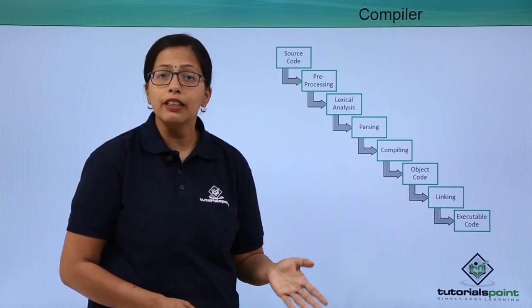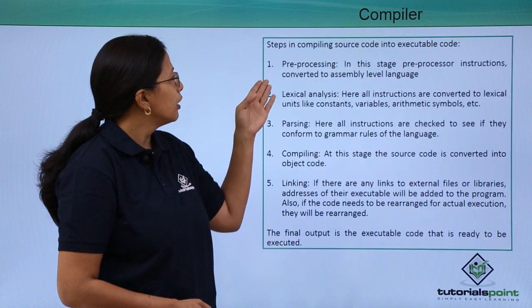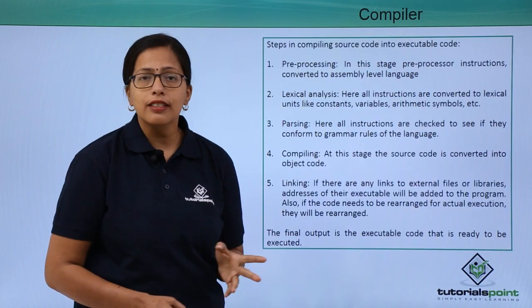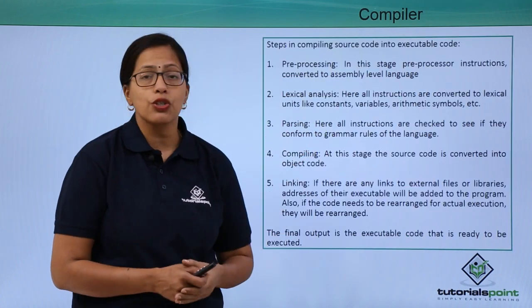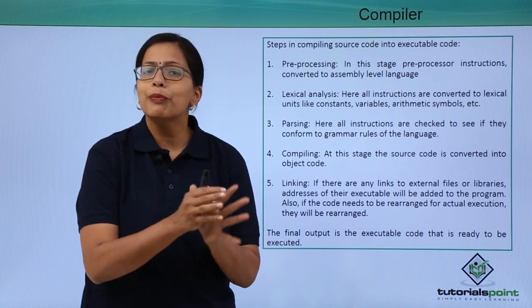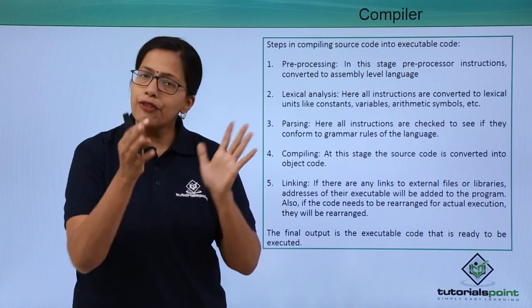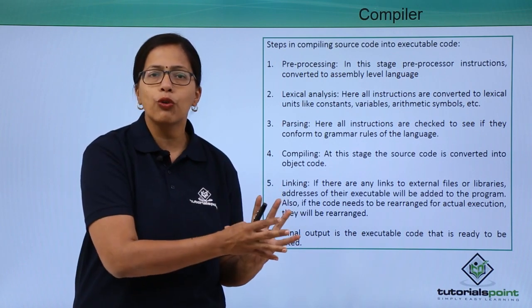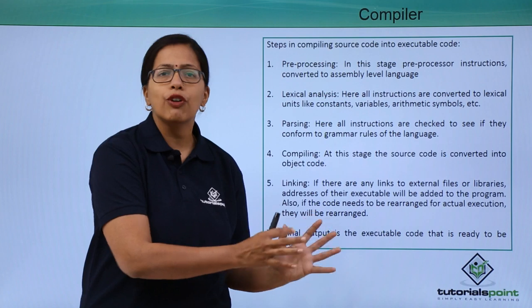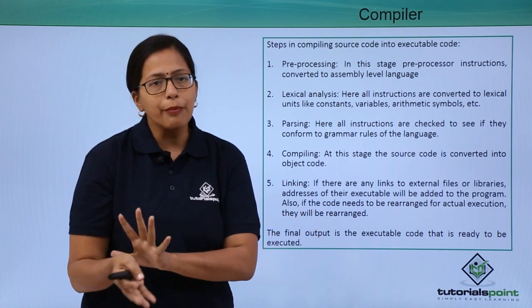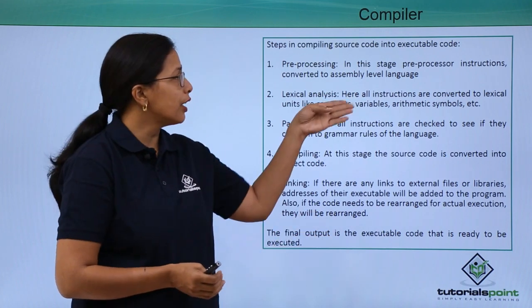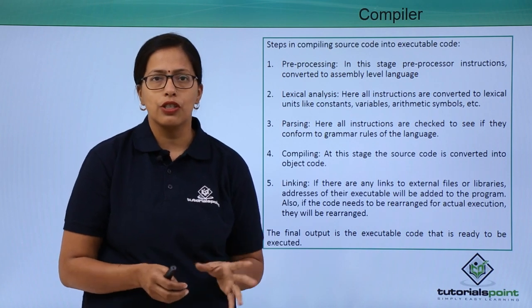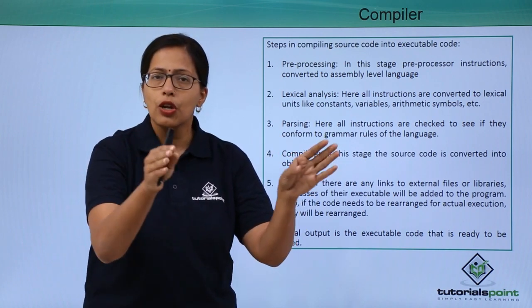Pre-processing: In this stage, the pre-processor instructions are converted to assembly level language. What are pre-processor instructions? Every high level language has some library of code that is already there for the user or the programmer to connect to, which are done using pre-processor instructions. So these instructions are converted into the object code.